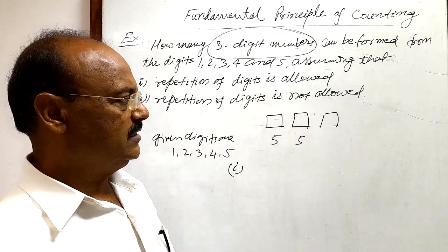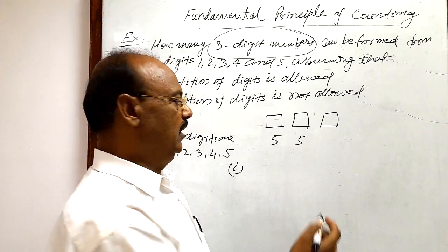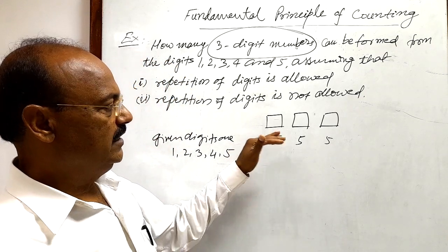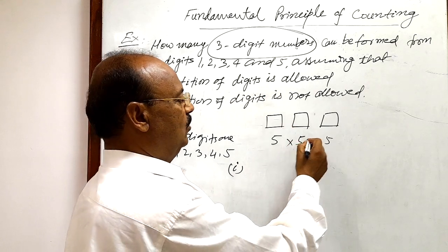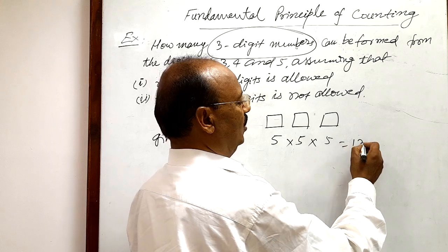Similarly, the units place in how many ways? Repetition of digits is allowed, again by five ways. So therefore, total number of three digit numbers formed in this way will be, by fundamental principle of counting, 5 times 5 times 5, which is equal to 125.